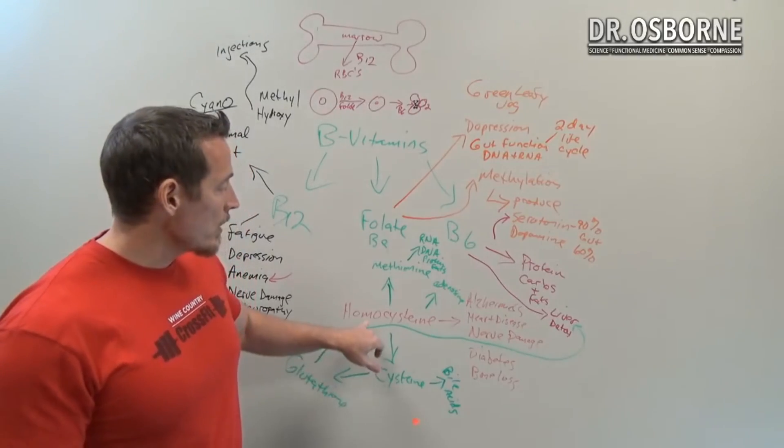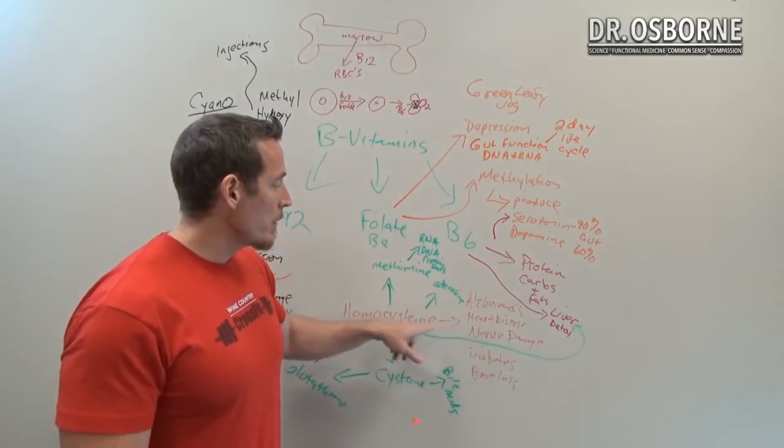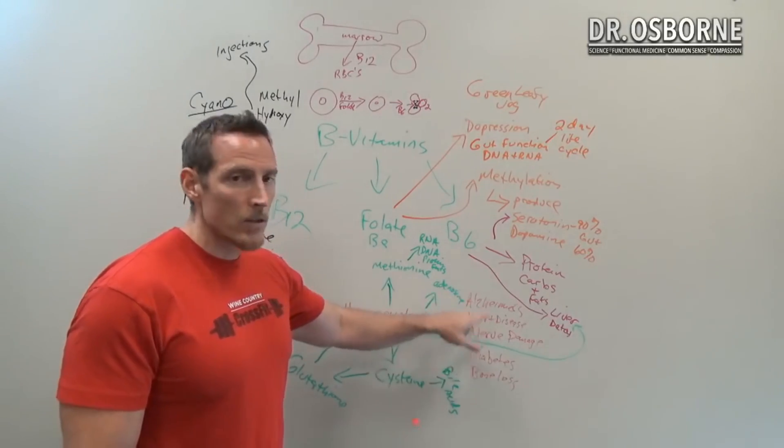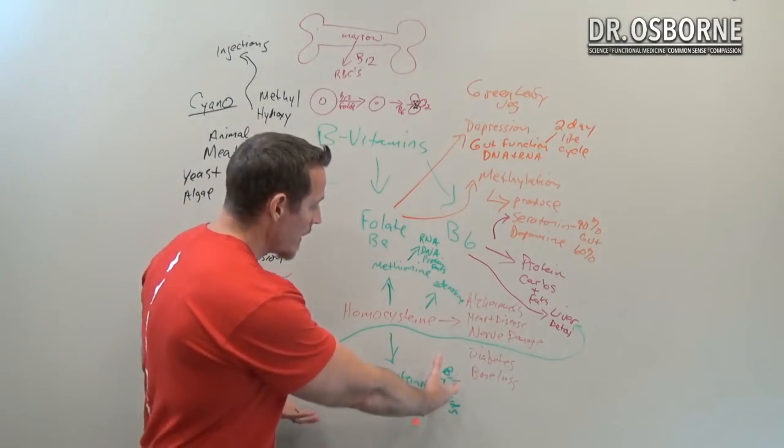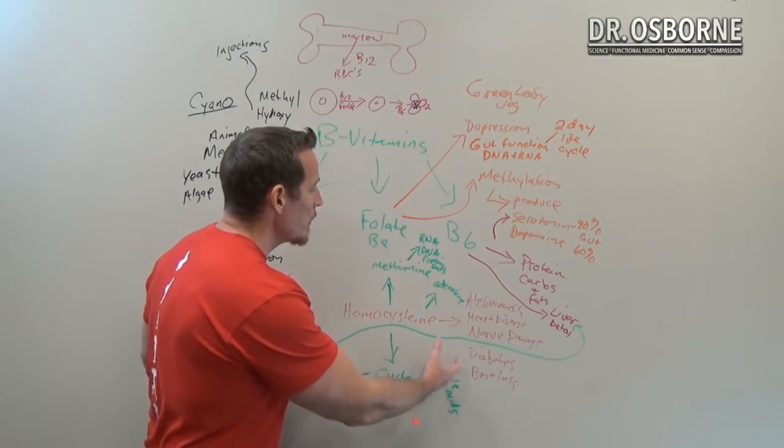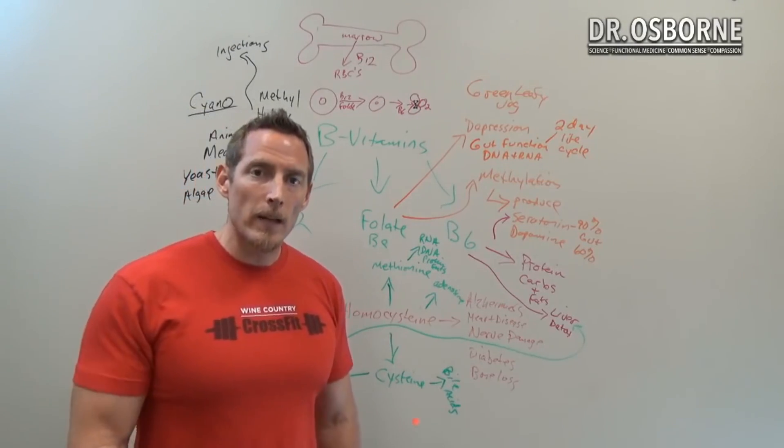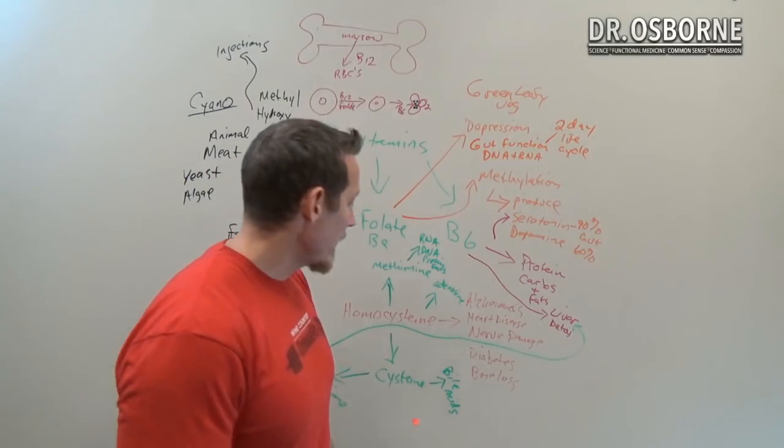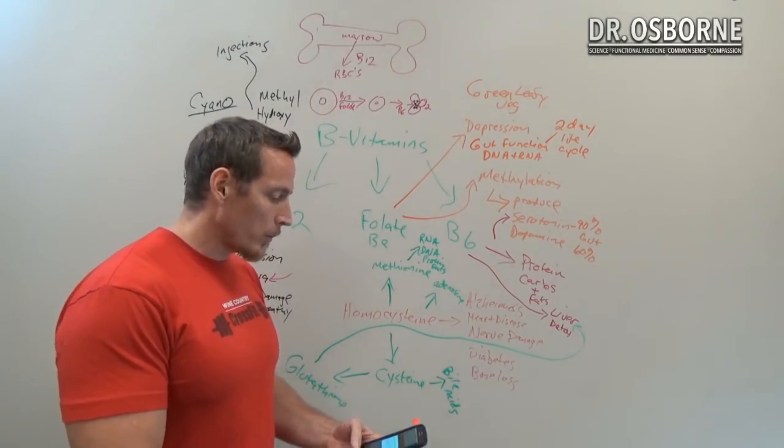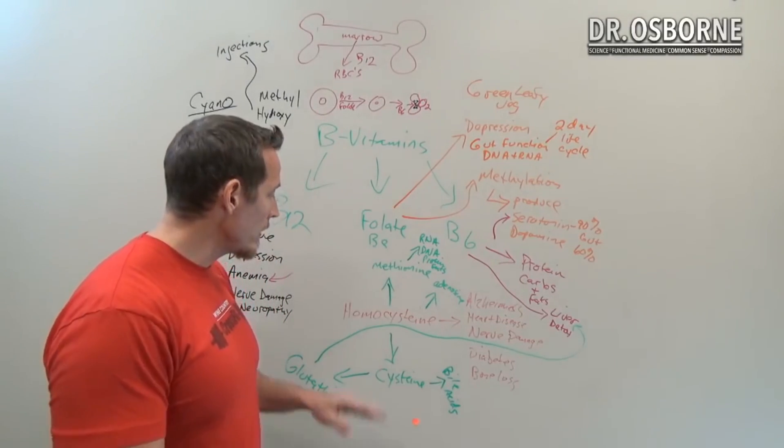Not only does the homocysteine directly damage our tissues—because that's part of that disease association, is that homocysteine is toxic to these tissues, so it can directly damage them—but the other part is we become less efficient at producing these other very, very important and critical metabolites that help our body heal, maintain, and repair. And that's one of the reasons why we want to know what homocysteine is, because if you know what homocysteine is, if you measure it, if it's too high...